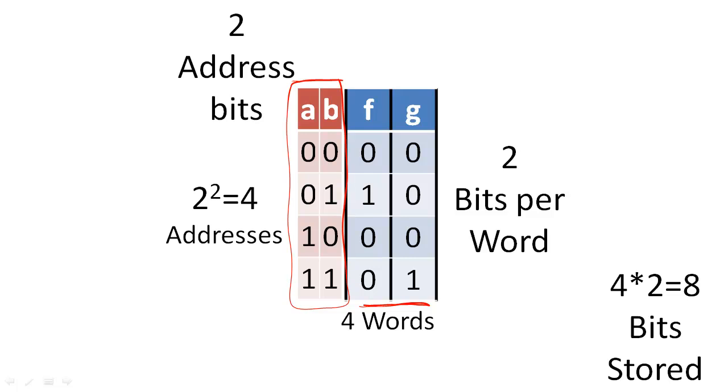The overall storage capacity of a ROM or RAM can be calculated by multiplying the number of addresses by the number of bits stored at each address.